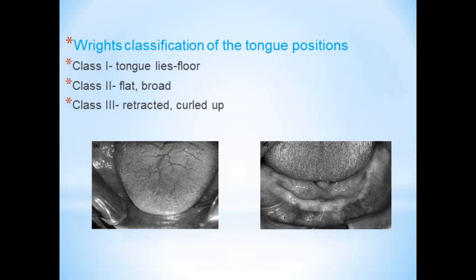Next is Wright's classification of tongue position. Class 1 is where the tongue lies in the floor of the mouth confined by the mandibular teeth — lateral borders resting on the occlusal surfaces of posterior teeth and the apex on the incisal edges of anterior teeth. Class 2 is a flat, broad tongue that fills the floor of the mouth and covers the alveolar ridges, making impression procedures difficult and denture stability hard to attain. Class 3 is a small, retracted, curled-up tongue that facilitates impression making but may jeopardize the lingual seal.